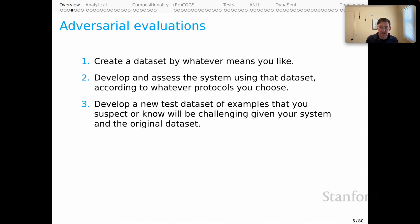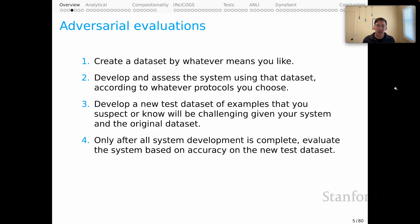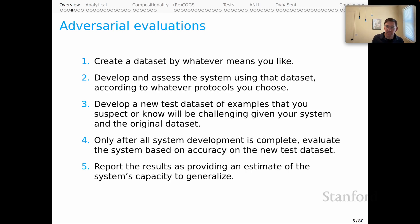Now the new part. You develop a new test dataset of examples that you suspect or know will be challenging given your system and the original dataset. Only after all system development is complete, you evaluate the system based on accuracy on that new test set. And then you report the results as providing some kind of estimate of the system's capacity to generalize as before.